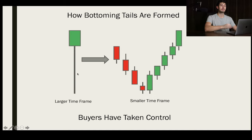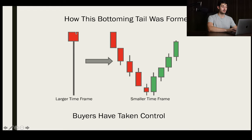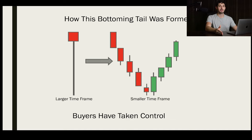When you see a bottoming tail, just know the buyers have taken control — and it doesn't matter if the candlestick is red. Even on a red candle, the buyers still took control at the bottom and brought it all the way back up, almost making new highs. So just because a candlestick is red or green doesn't tell you the whole story about who won. You really need to understand whether it's a bottoming tail or a topping tail to have conclusive information.